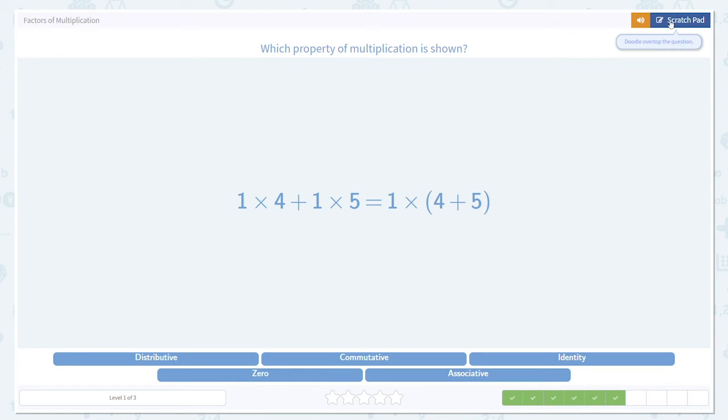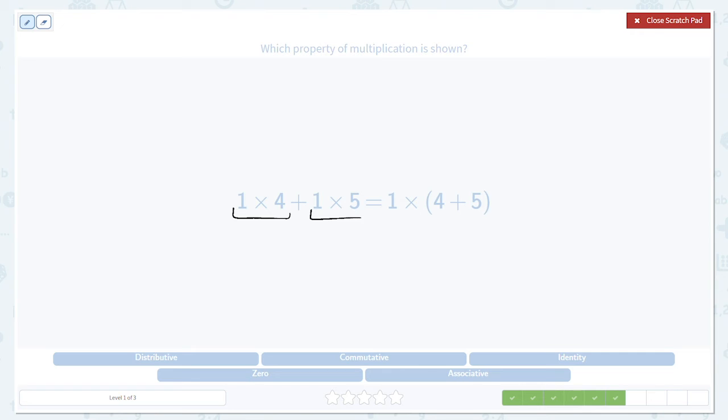This is another one that looks very complicated, but let's look at what happened. On the right hand side, we have 1 multiplied by a sum, 4 plus 5. On the left hand side, we have a sum of two products, 1 times 4 plus 1 times 5. This is what we call the distributive property.